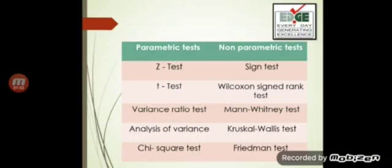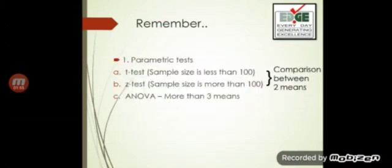The points to remember about parametric tests: the T test and Z test are for comparison between two means. When means are in question, that means the data is quantitative. When two sample sizes with means are being compared, you use the T test or Z test. T test is used when the sample size is less than 100, also called a small sample, and whenever a large sample size is used, a Z test is used.